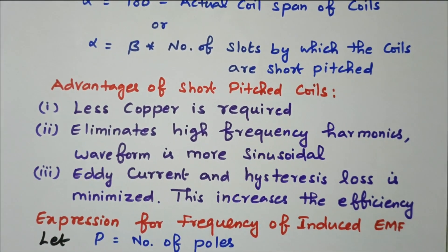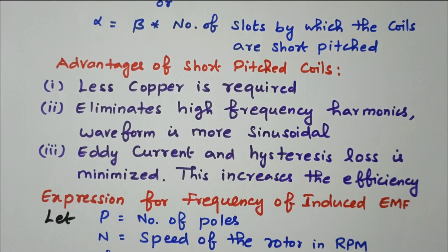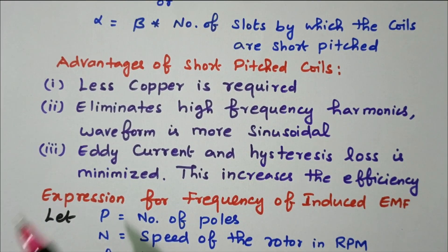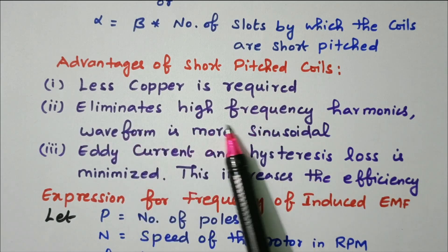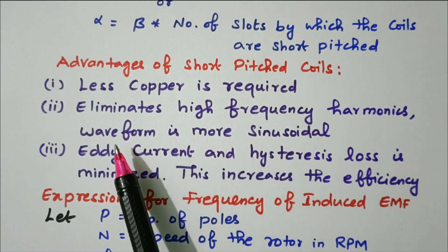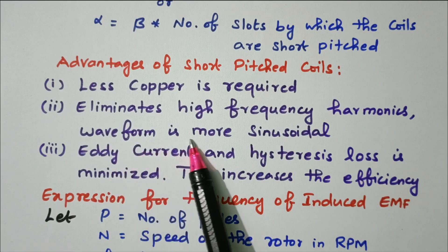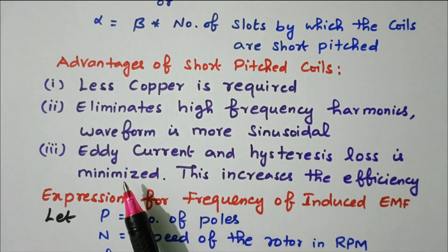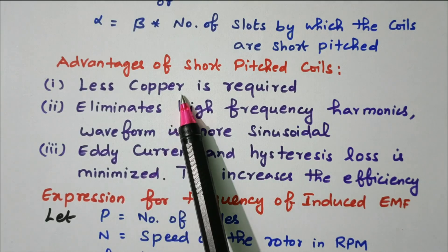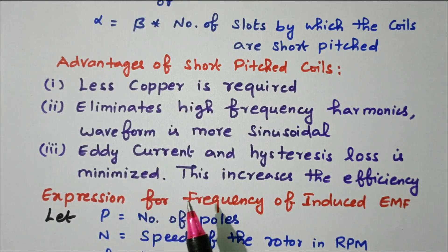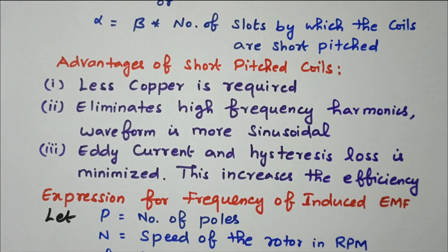Now the advantages of short-pitched coils: less copper is required; it eliminates high-frequency harmonics so the waveform is more sinusoidal; eddy current and hysteresis losses are minimized; and with less copper and reduced losses, the efficiency increases.